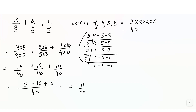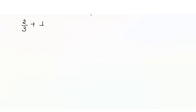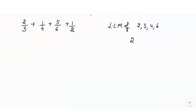Similarly, let's take another example — now with 4 fractions instead of 3 and add them using the same method. The question is 2 by 3 plus 1 by 4 plus 5 by 6 plus 1 by 2. The first step is to find the LCM of 2, 3, 4, and 6.